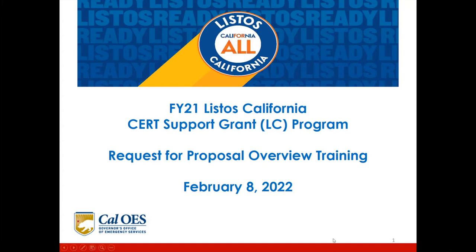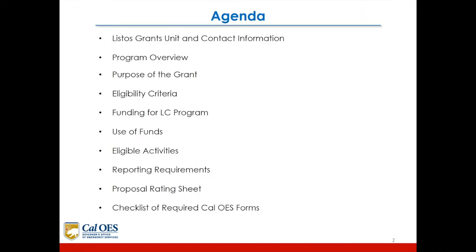Thank you, Cindy. Today is February 8, 2022 — Fiscal Year 21 Listos California CERT Support Grant LC Program, Request for Proposal Overview Training. The agenda today covers: Listos Grants Unit and Contact Information, Program Overview, Purpose of the Grant, Eligibility Criteria, Funding for the LC Program, Use of Funds, Eligibility Activities, Reporting Requirements, Proposal Rating Sheet, and Checklist of Required Cal OES Forms.